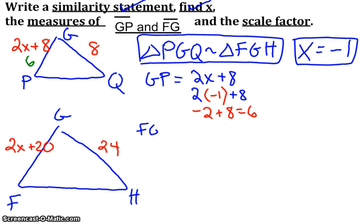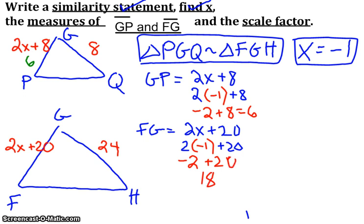Alright, and then they want us to find the length of FG. Well, FG is represented by 2X plus 20. So when I replace the X with negative 1 here, you end up with negative 2 plus 20, which will be 18. So it looks like FG can be replaced with 18. So there I took care of finding the lengths of GP and FG.